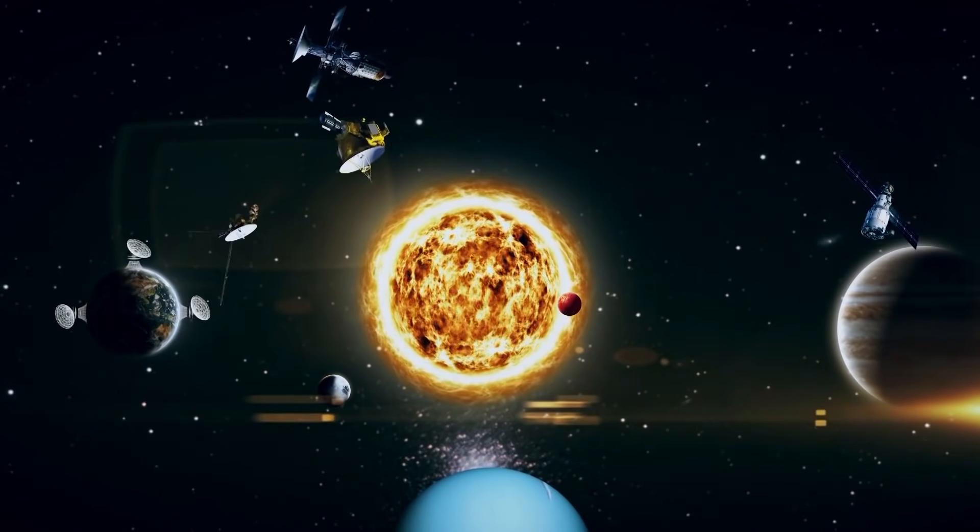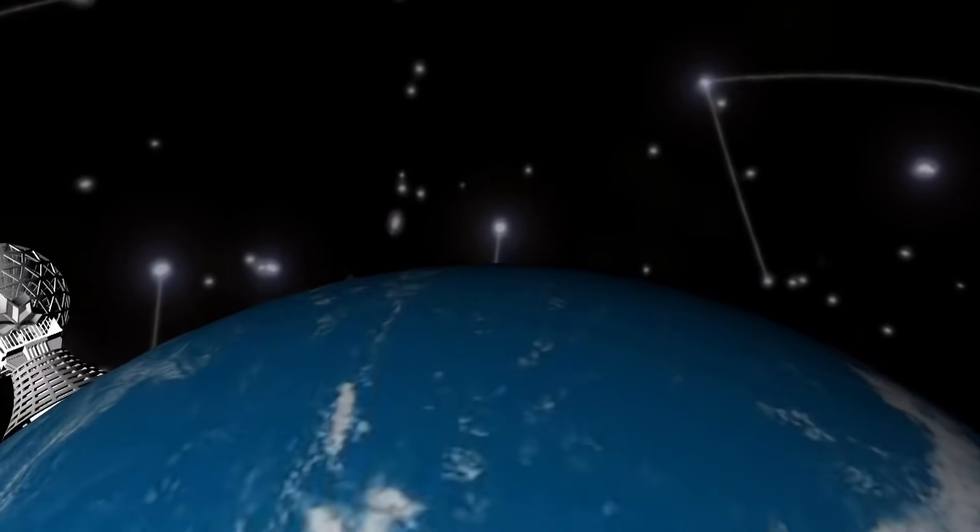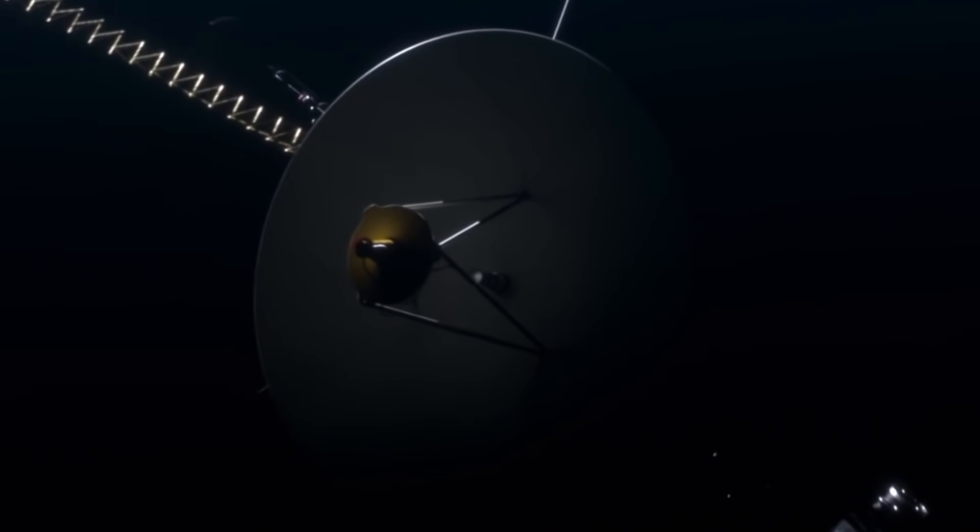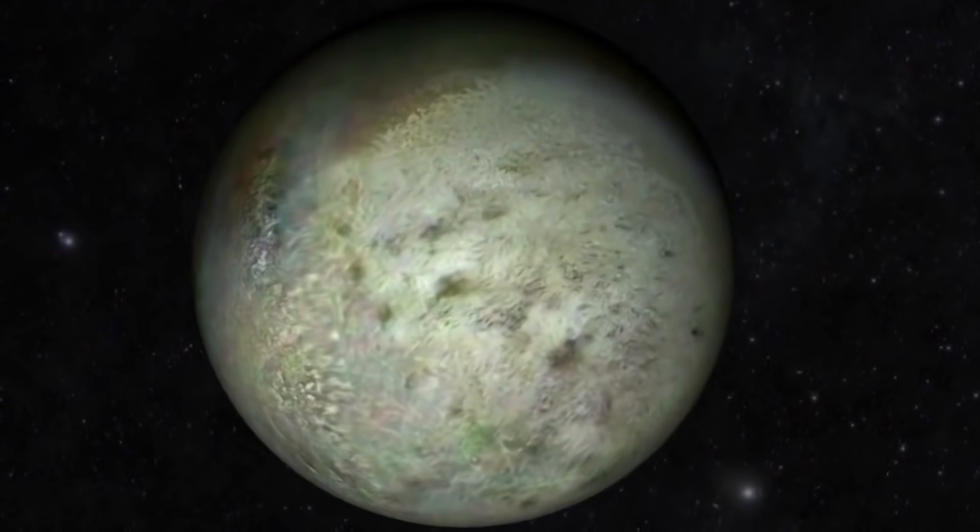All interplanetary devices move near the ecliptic plane and are in the visibility zones of all three NASA Deep Space Communication Observatories. However, Voyager 2 became an exception to this rule.